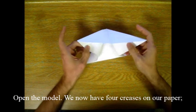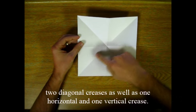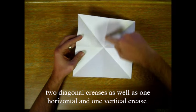Open the model. We now have four creases on our paper. Two diagonal creases as well as one horizontal and one vertical crease.